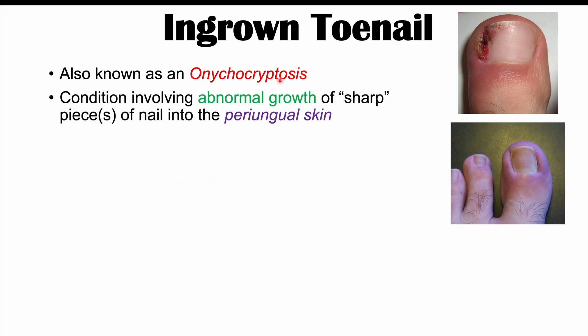Ingrown toenails, or onychocryptosis, is a condition involving abnormal growth of a sharp piece or pieces of nail into the periungual skin. The periungual skin is the skin on the side of the nail.